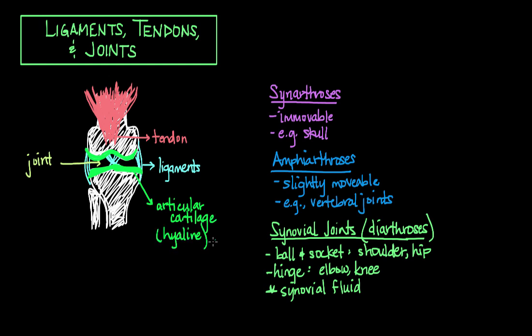Articular cartilage, like all cartilage, is avascular, meaning it lacks any sort of vasculature or blood vessels. And so it has a hard time getting the nutrients it needs to heal and recover if it were to become damaged by overuse or infection.